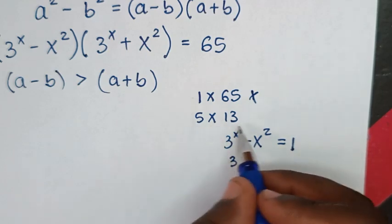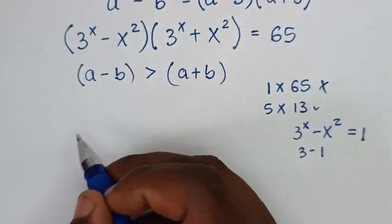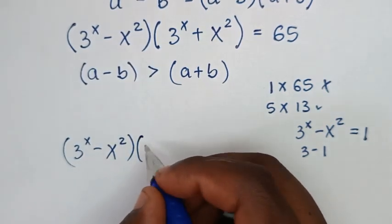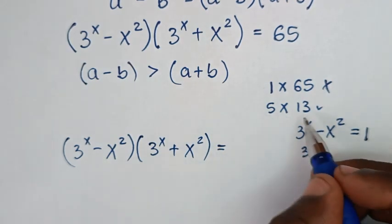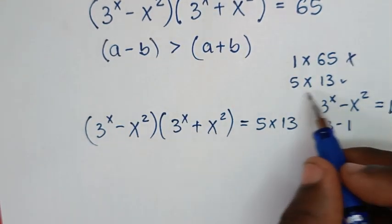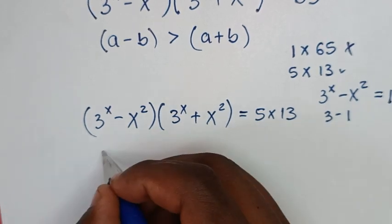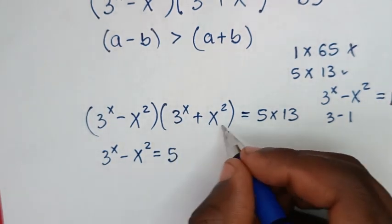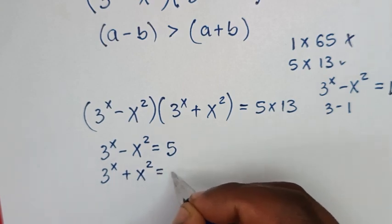For the second possibility, we check: 3 power of x minus x squared, times 3 power of x plus x squared, is equal to 5 times 13. Comparing the smaller factor with the smaller value, it will be 3 power of x minus x squared is equal to 5. And comparing the larger, it will be 3 power of x plus x squared is equal to 13.